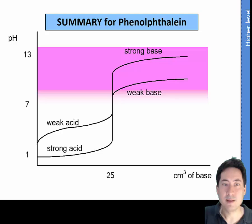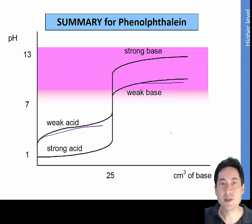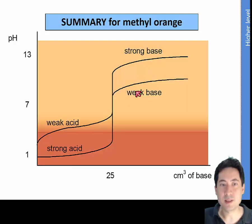Just a basic summary: for a weak acid, the pH graph starts slightly higher than normal; if you end with a weak base, it finishes slightly lower. You might get any combination of those four curve types. You must have a strong base to use phenolphthalein, and you must have a strong acid to use methyl orange.